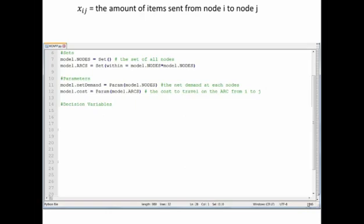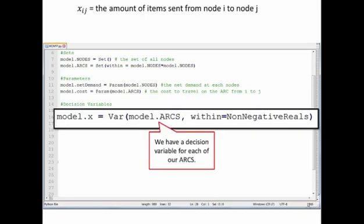If we were to put this in our model file, we would have an expression that looks like this: model.X is equal to var, and then in parentheses we'd say model.arcs. This tells PMO that we want to make a decision variable for every single one of the arcs that we defined. The last portion, within non-negative reals, tells PMO that we want all of these decision variables to be positive or non-negative.